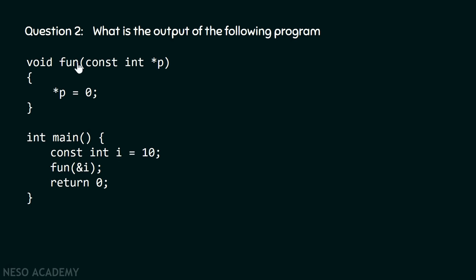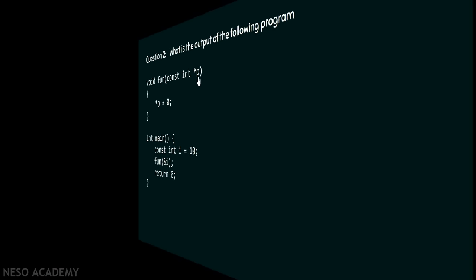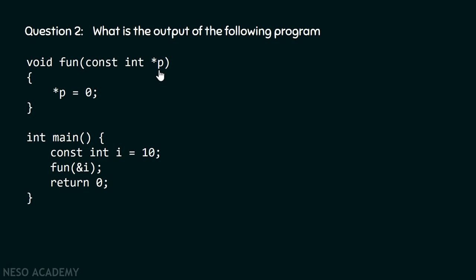In this function, we are receiving the address of variable i using pointer p. The data type we mention here must be the data type of variable i, because this pointer will store the address of variable i — therefore, the data types must match.